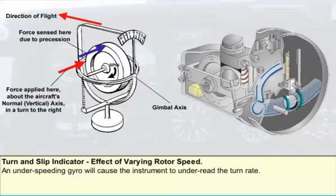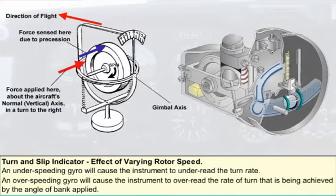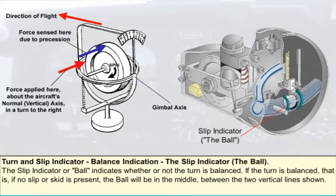This means that the instrument will under-read the turn rate. Alternatively, if the gyro were to over-speed, by the opposite process it will over-read the rate of turn being achieved by the angular bank applied. It's desirable that turns should be properly balanced with no side slip or skid.